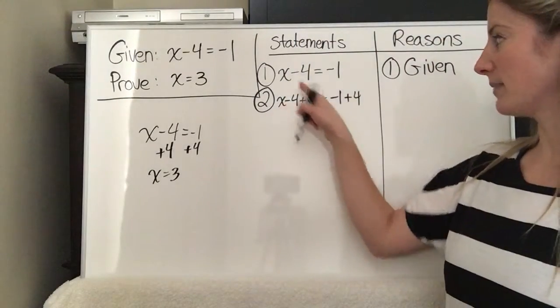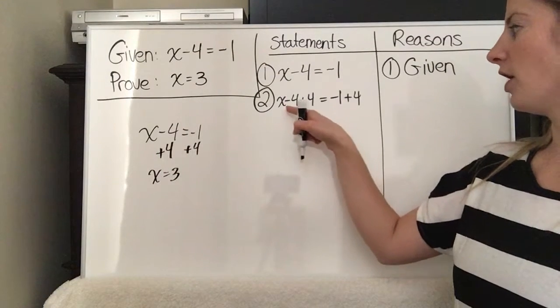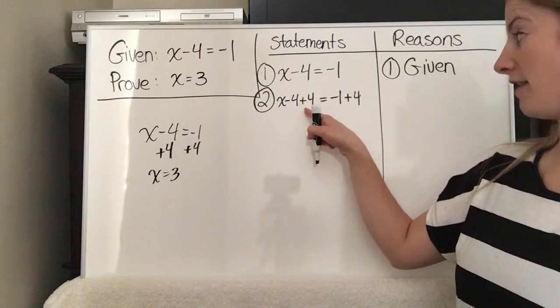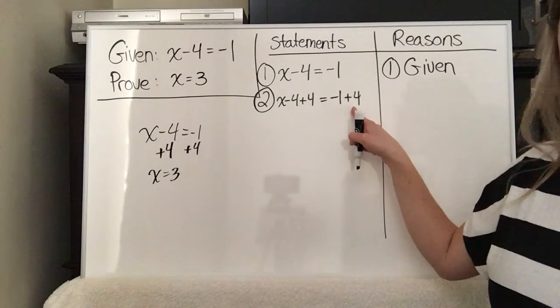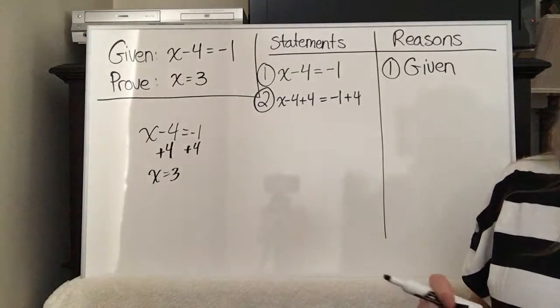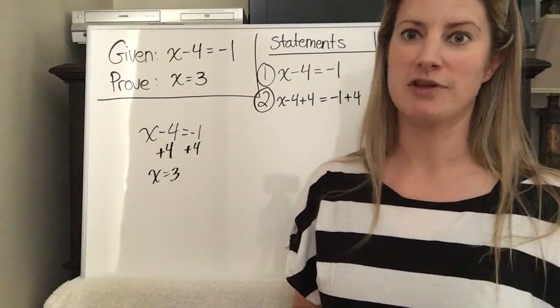So as you can see, I wrote x minus 4 like we originally have, and then instead of putting the plus 4 underneath, I put it on the same line. So minus 4, and then add 4 to this side, and then remember, whatever you do to one side, you have to do to the other, so you add 4 to the other side. And the reason that we're allowed to do that is the addition property of equality.